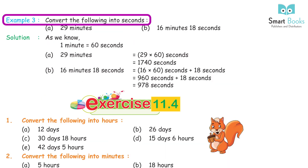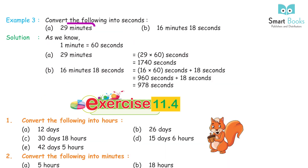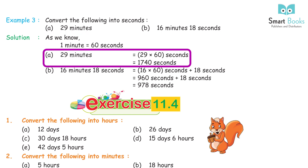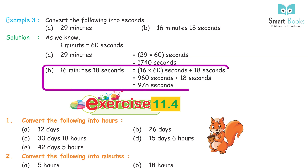Example 3: Convert the following into seconds. A. 29 minutes. B. 16 minutes 18 seconds. Solution: 1 minute = 60 seconds. A. 29 minutes = 29 × 60 = 1740 seconds. B. 16 minutes 18 seconds = 16 × 60 + 18 = 960 + 18 = 978 seconds.